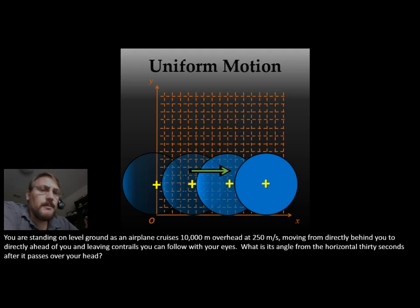So this is a problem down here on the bottom that I want to look at. You're standing on level ground as an airplane cruises 10,000 meters overhead at 250 meters per second, moving from directly behind you to directly in front of you.